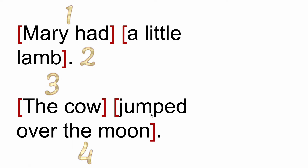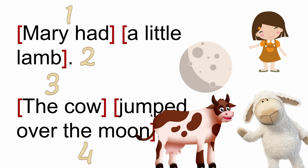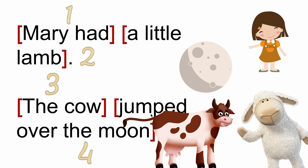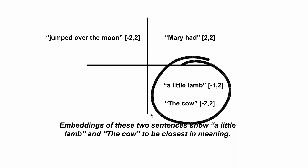Which of these chunks of text are actually closest in meaning? Are 'Mary had' and 'jumped over the moon' close in meaning? Not really. How about 'a little lamb' and 'the cow'? Those two seem to be a lot closer in meaning because they're both farm animals. So imagine taking these chunks of text, converting them to two-dimensional sets of numbers, and then plotting them to figure out which ones are closest in distance. You can think of each one of these sets of numbers as an embedding, or what we like to call a vector. Plotted on an XY-axis in two-dimensional space, we can see visually that 'a little lamb' and 'the cow' are the closest in meaning and therefore the closest in distance.